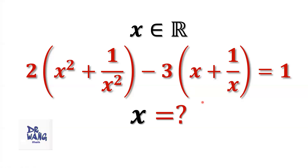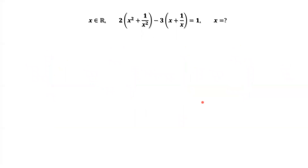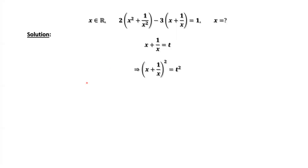How? Here is the detail. We define a new variable t, where t equals x plus 1 over x. Then we square both sides. We have x squared plus 2 plus 1 over x squared equals t squared. Moving 2 to the right-hand side, we have x squared plus 1 over x squared equals t squared minus 2.